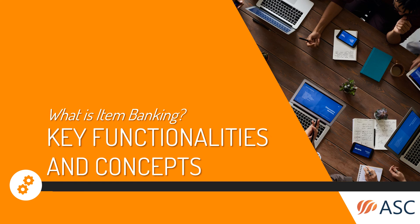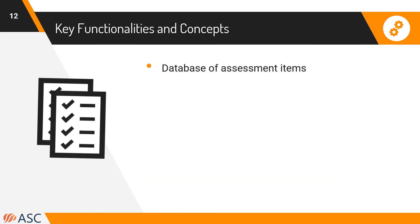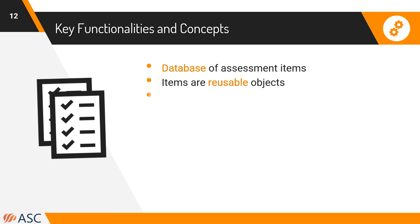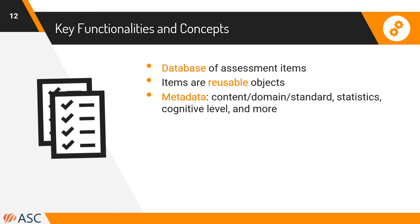Some of the key functionalities that define a real item making system: first, it's a database of assessment items where those items are reusable objects. They're going to have a lot of metadata associated with them. Content domain or standard is usually the most common. Statistics is also very important. Many organizations will track cognitive level, author, date edited, date created, date used on a test form, which test forms it was used on, and so on.